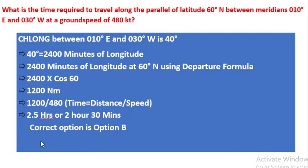So the solution is summarized: 40 degrees is equal to 2400 minutes of longitude. 2400 minutes of longitude at 60 degrees north using departure formula is 2400 into cos 60, which equals 1200 nautical miles. 1200 divided by 480, time equals distance upon speed, gives us 2.5 hours or 2 hours 30 minutes.